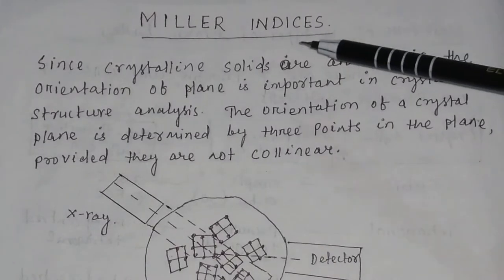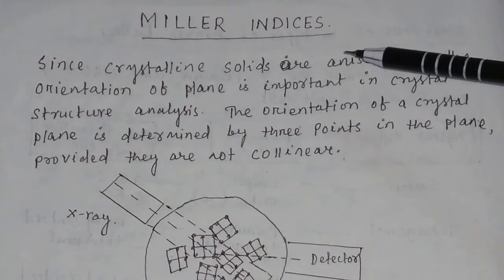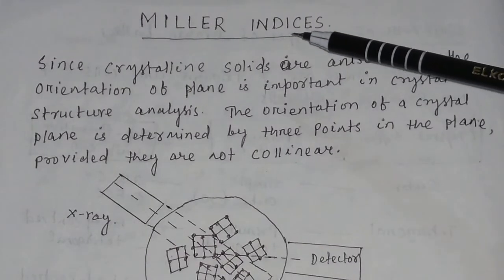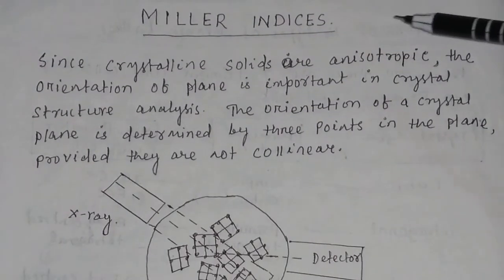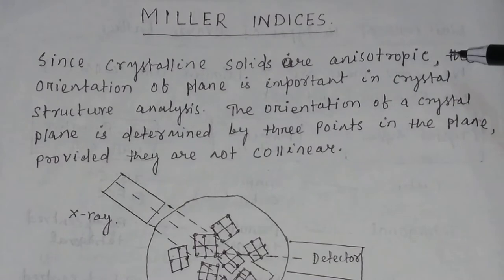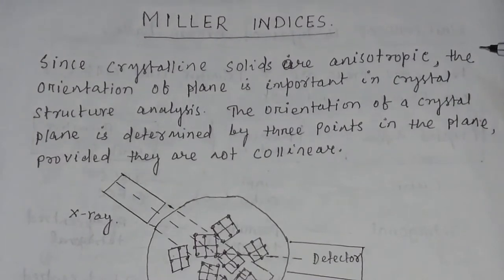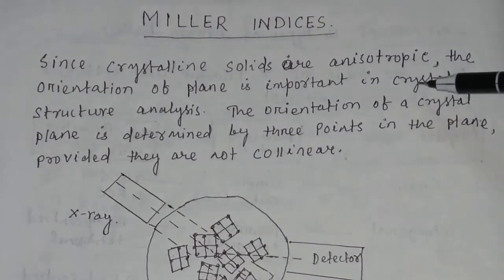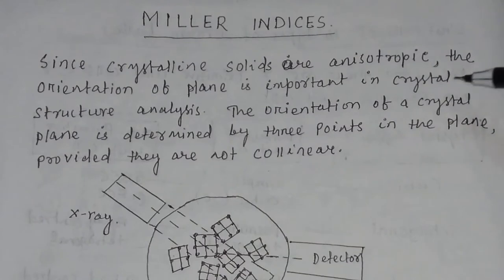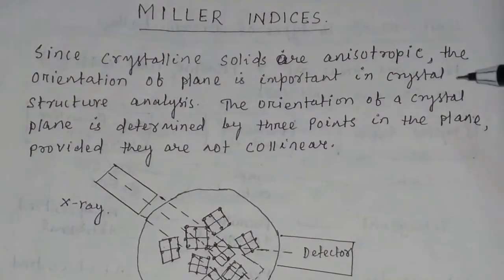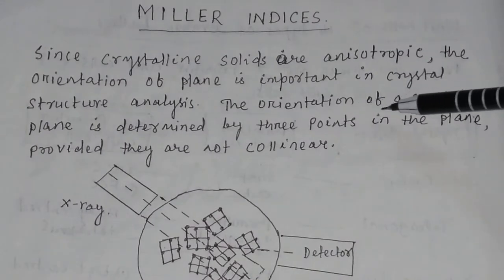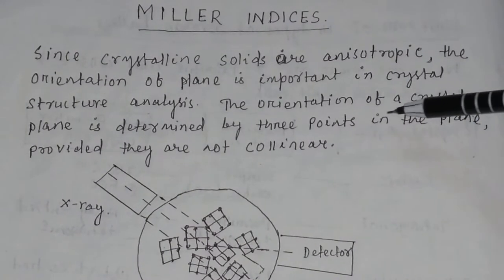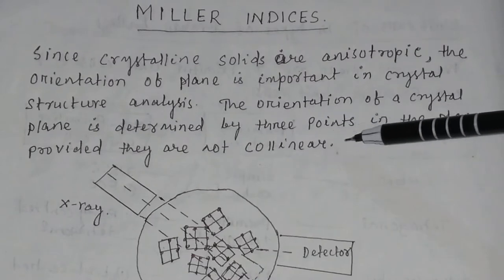Let us discuss a very important topic in solid state physics — Miller indices. We know crystalline solids are anisotropic, and that is why the orientation of the plane is important in crystal structure analysis. For the orientation of any crystal plane, we need a minimum of three points in the plane, provided the three points are not collinear.